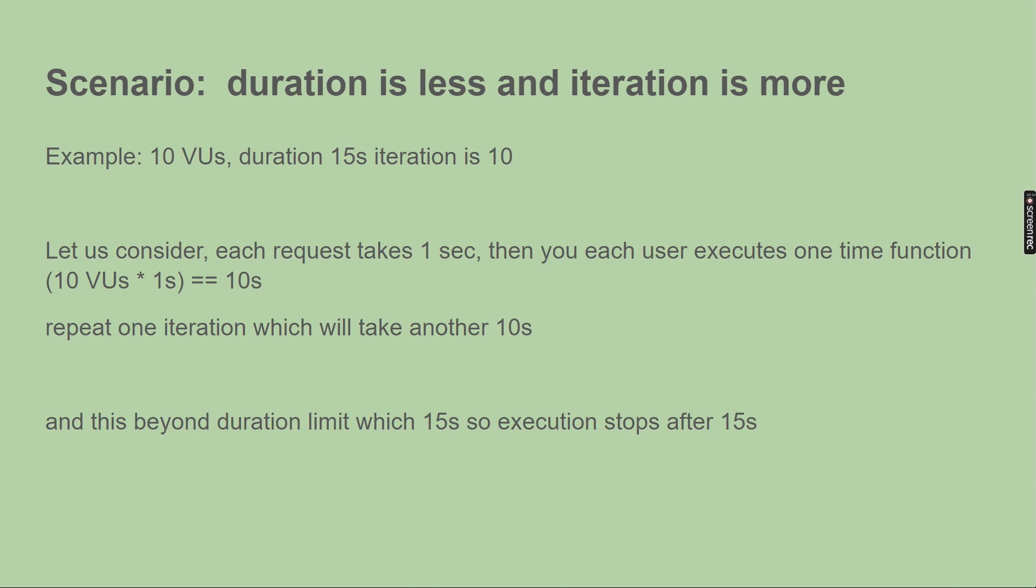Now what happens? Let's say the first 10 virtual users target the application and it takes one second for one iteration. It completes 10 seconds. Since the iteration is 10, it goes to the second iteration for all 10 virtual users. However, after completing the 5 virtual users in second iteration, you already exhausted 15 seconds, which is the total duration. Though the virtual users have more iterations, the duration has been already exhausted. So you will come out of the execution because the test execution we have set only 15 seconds.